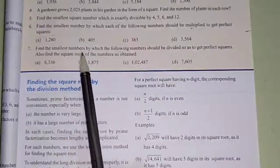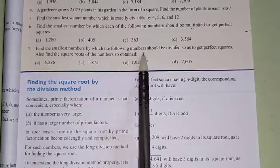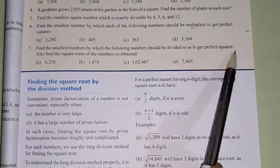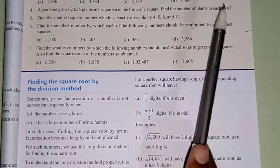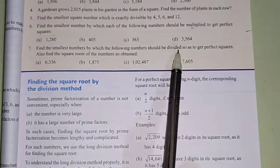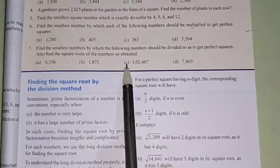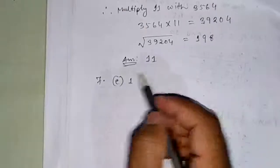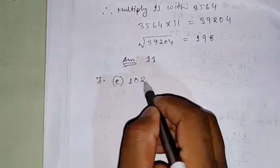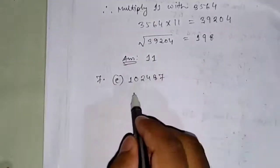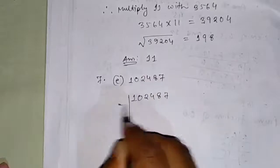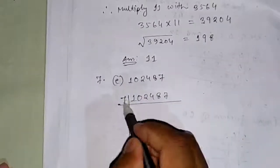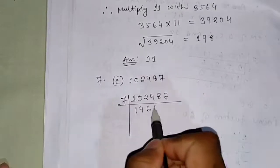Question number 7: find the smallest number by which the following numbers should be divided so as to get a perfect square. This is similar to question 6 — the same method applies — but the difference is that in question 6 we had to multiply, and here we have to divide. I am doing question number c, which is 102487.